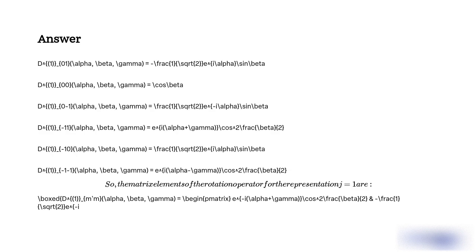D^1_{01}(alpha, beta, gamma) equal to (-1/sqrt(2)) E^(i alpha) sin(beta). D^1_{0,-1}(alpha, beta, gamma) equal to E^(i(alpha+gamma)) cos^2(beta/2). D^1_{-10}(alpha, beta, gamma) equal to (1/sqrt(2)) E^(i alpha) sin(beta). D^1_{-1,-1}(alpha, beta, gamma) equal to E^(i(alpha-gamma)) cos^2(beta/2).